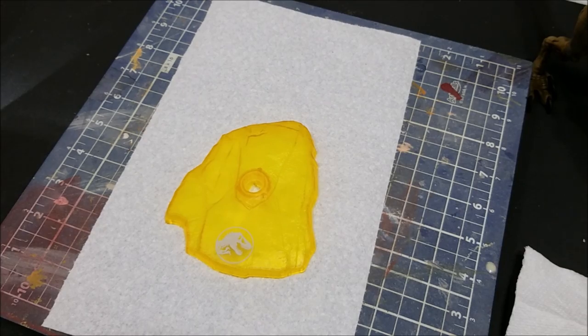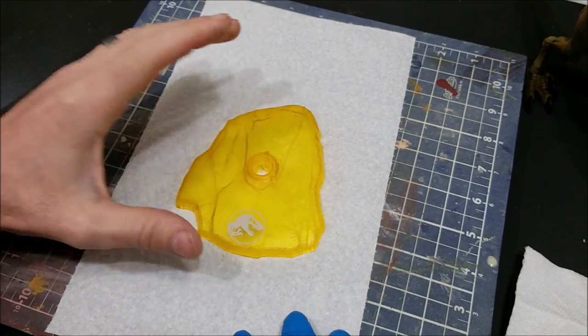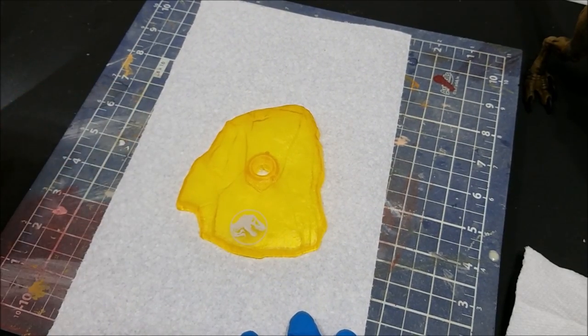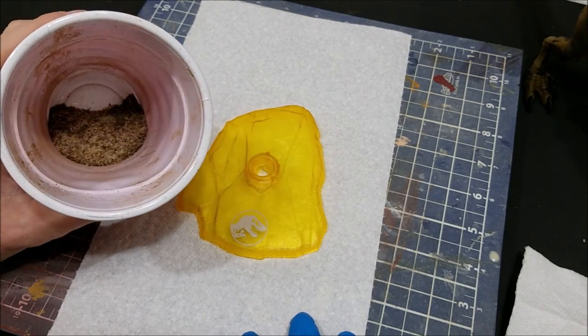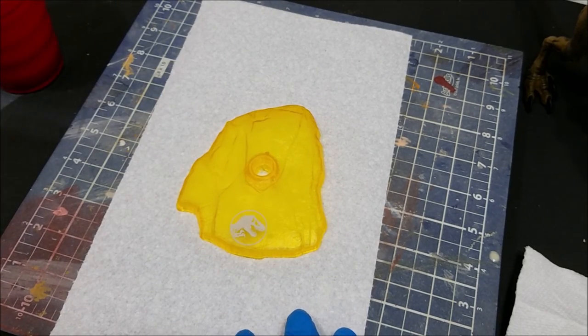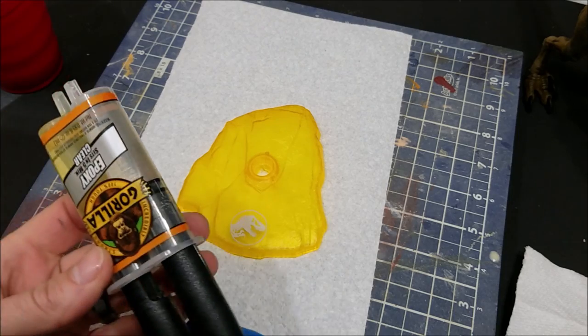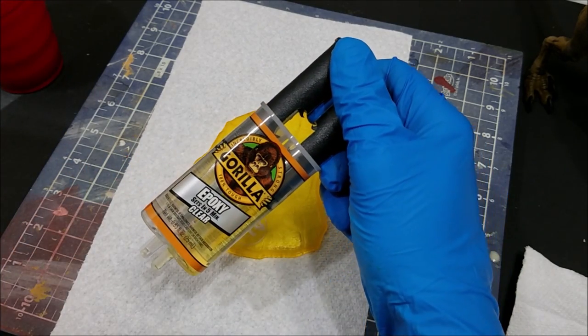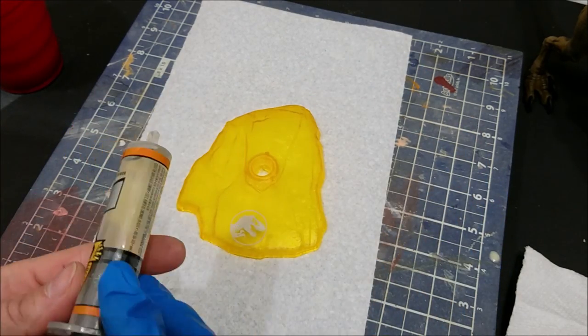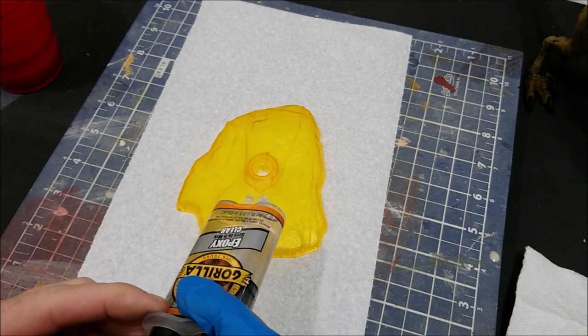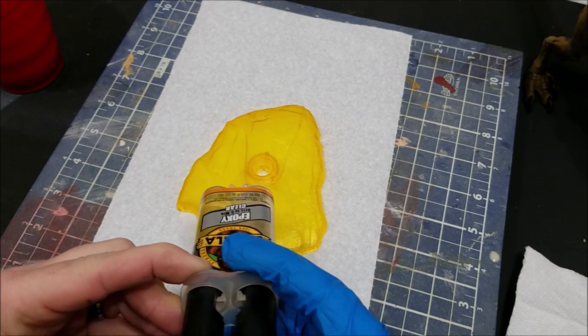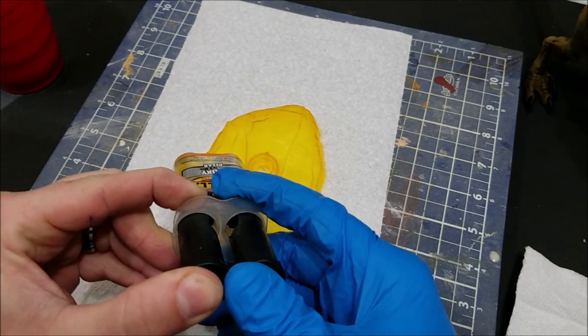For base number two we're going to be mixing it up and taking it to the next level. I want to add some terrain, texture, and rocks to this one. I'm going to take some of this Gorilla Glue epoxy and spread it all over the base.